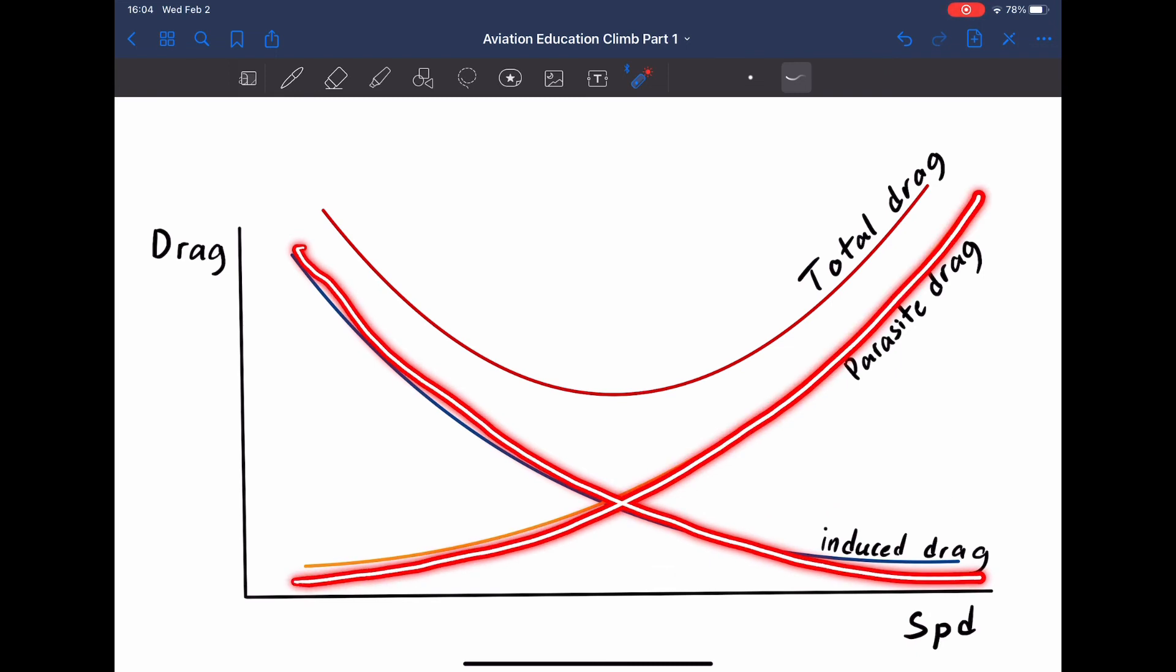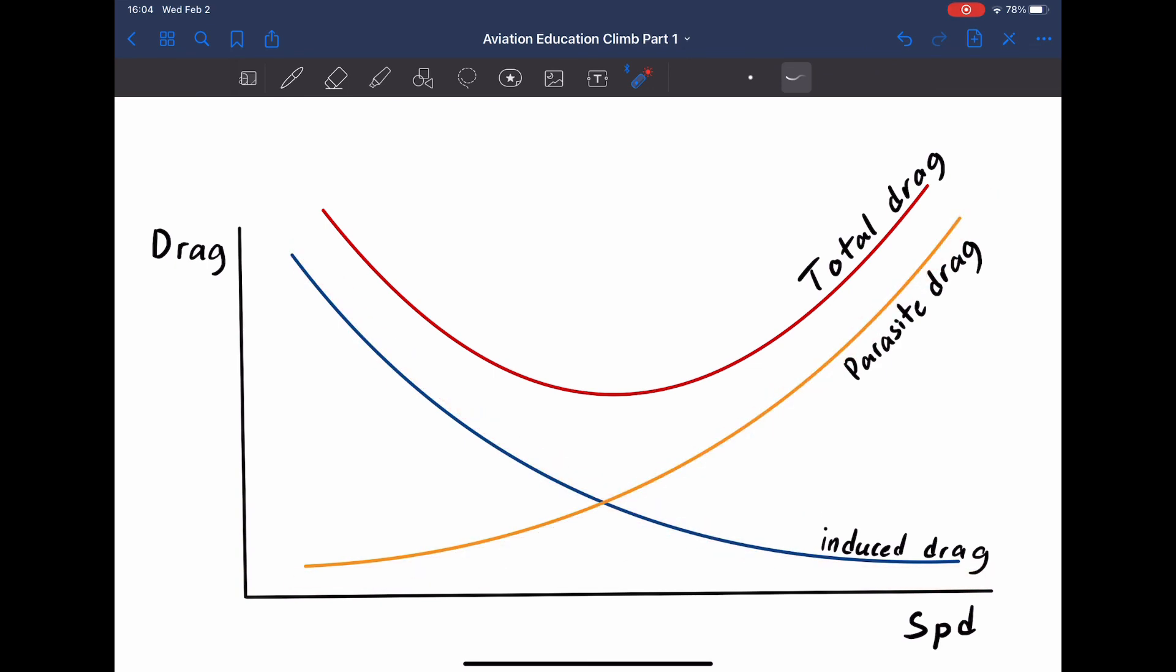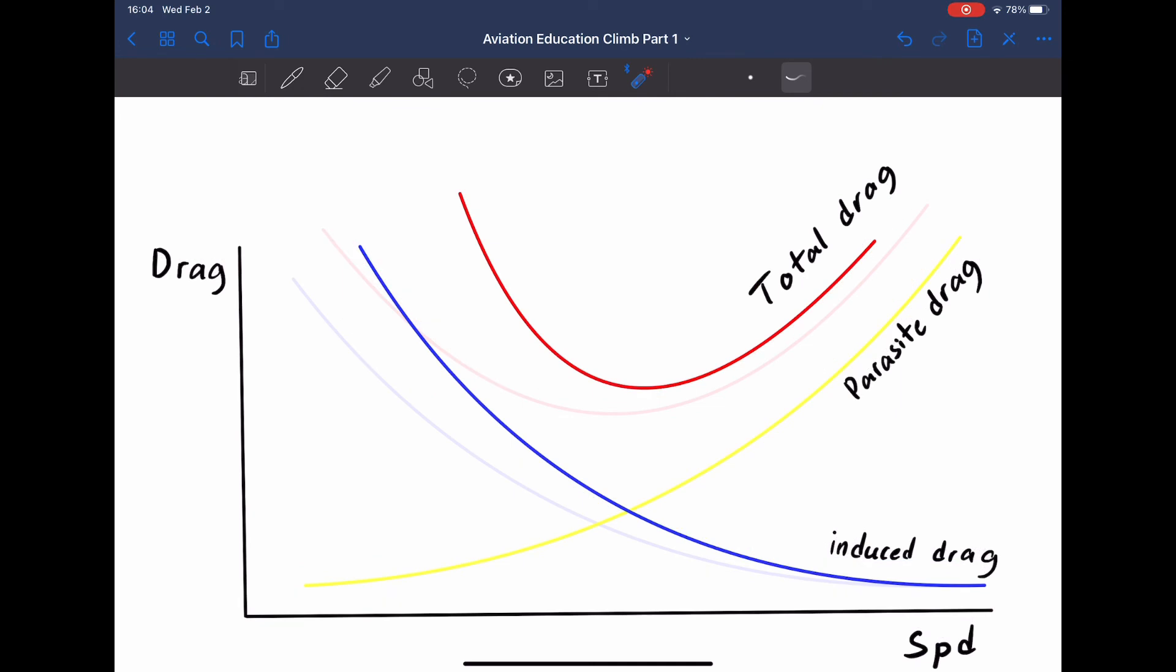I'm going to show you how the increase in induced drag affects the drag curves as well as the speeds. Do you guys notice anything? The induced drag curve and the total drag curve have curved upwards towards the right. Also, notice what happens to the VX speed. Originally, it's here, but as the induced drag increases, the speed also increases.